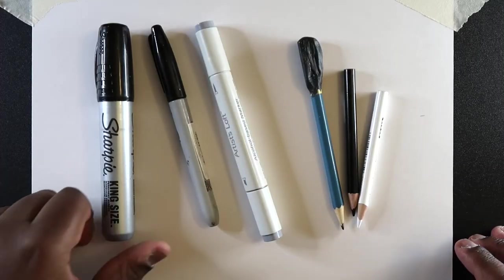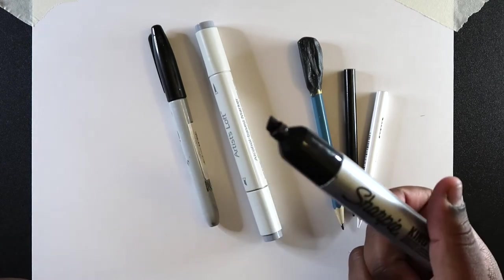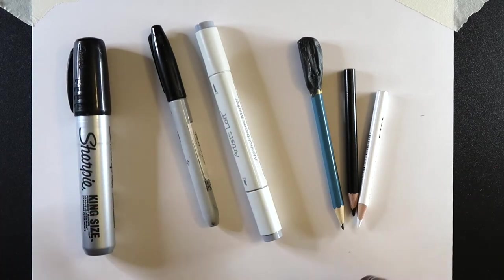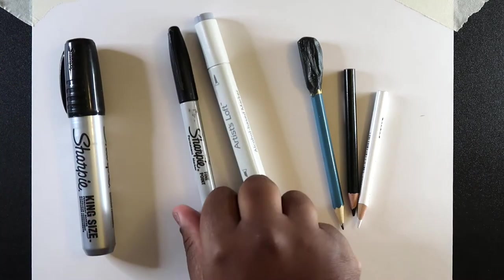Here are some of the supplies that I use the most. I use a big king size Sharpie. It's got a big chisel tip to it, so I like to use this for filling in really dark black areas. And if I need to go even smaller, I can use my fine point Sharpie, which is used for smaller areas.